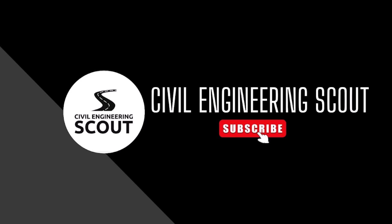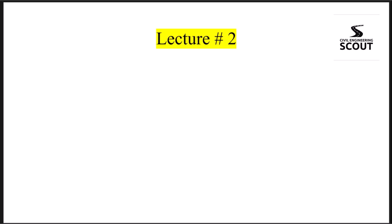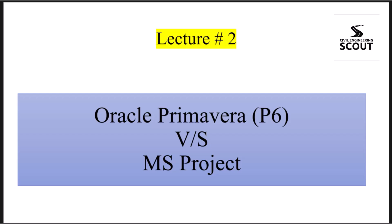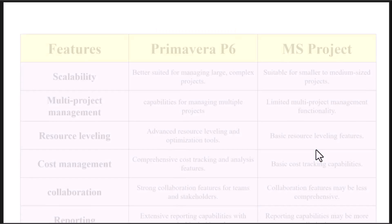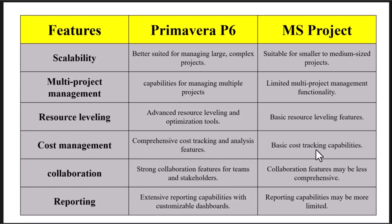Hello everyone. Today is the second lecture of this course. In this second lecture, we will compare two softwares which are mostly used in construction projects for management: number one is Oracle Primavera P6 software, and the other one is MS Project. We will compare both softwares and decide which software is more powerful and which software we should use on our projects.